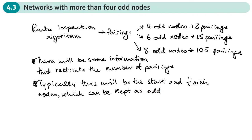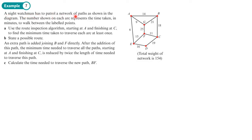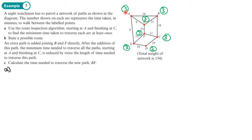So our watchman has to patrol a network of paths as shown in this diagram. The number shown on each arc represents the time taken in minutes to walk to the labelled points. Use the route inspection algorithm starting at A and finishing at C to find the minimum time taken to traverse each arc at least once. The first thing we're going to do is write down the valency of each vertex. So we've got: A is three, B is three, C is three, D is two, E is three, F is three, and G is three. So all of those vertices have an odd valency. But since we're starting at A and finishing at C, these can be kept as odd. So we only need to consider the pairings of B, E, F, and G.